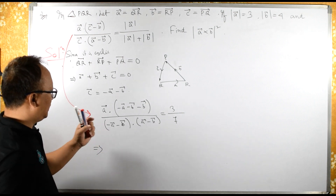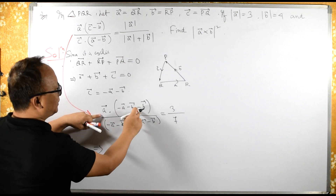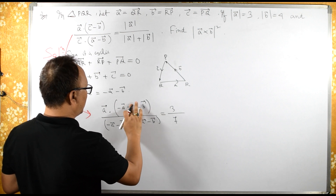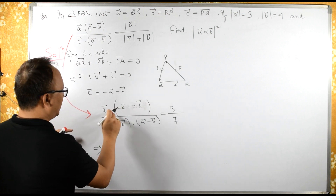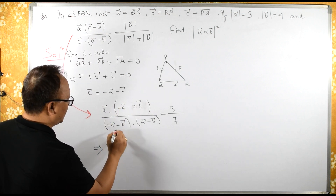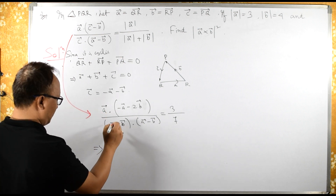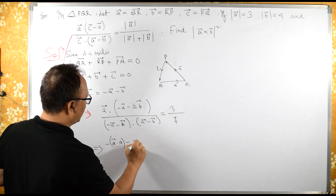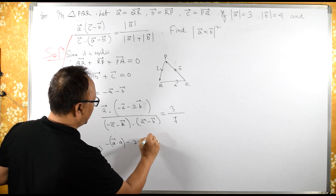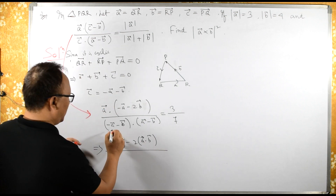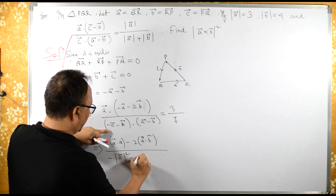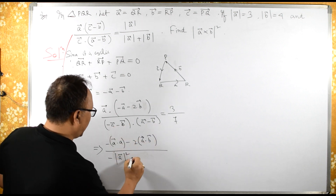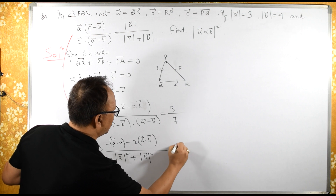So this implies: the expression expands to minus mod of A squared, which is A dot A, minus twice A dot B, minus A dot B. The terms minus AB and plus AB cancel. So we get: minus mod of A squared minus twice A dot B plus mod of B squared, all equal to 3 over 7.